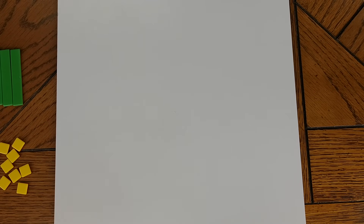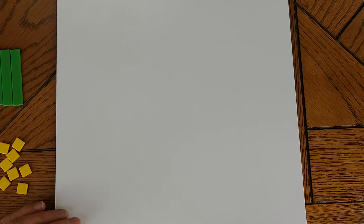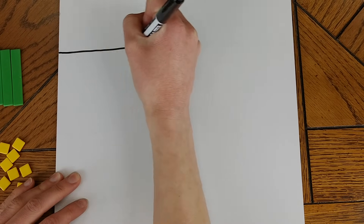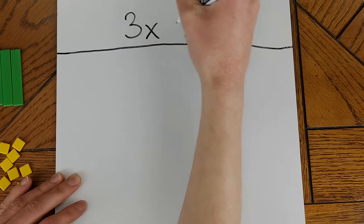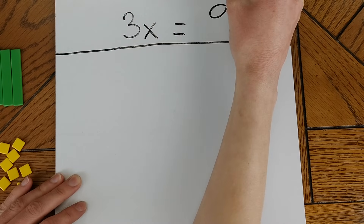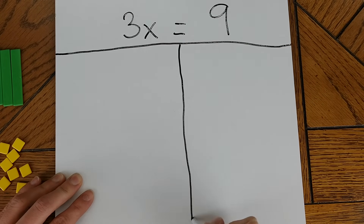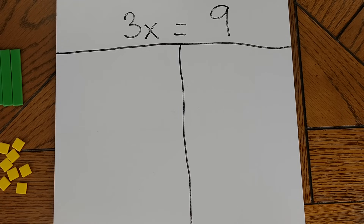You can use algebra tiles to model solving one-step equations. It's helpful for each student to have a whiteboard or blank piece of paper and a dry erase or permanent marker. Begin by drawing a line across the top of the board about an inch and a half from the top. Write the equation you wish to solve above this line. Then underneath the equal sign, draw a line coming down to divide the two sides of your equation. Next, use the algebra tiles to model the equation on each side.